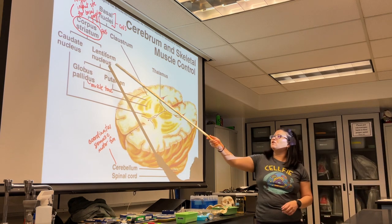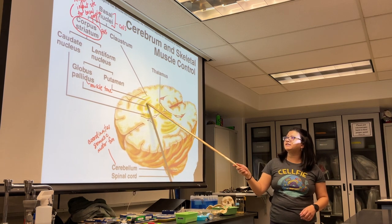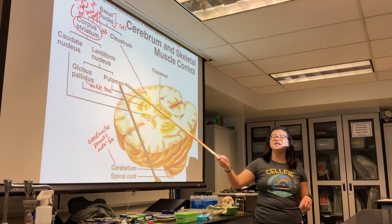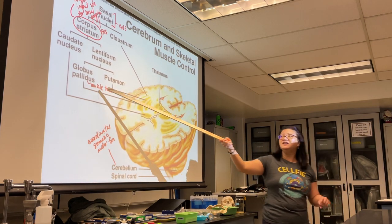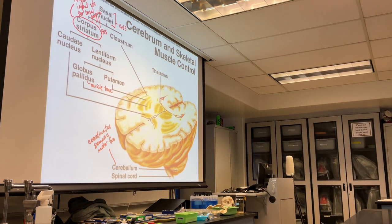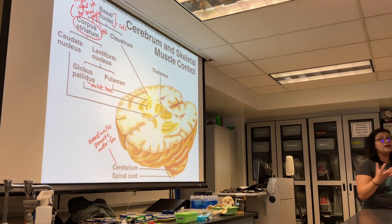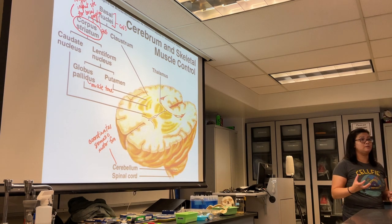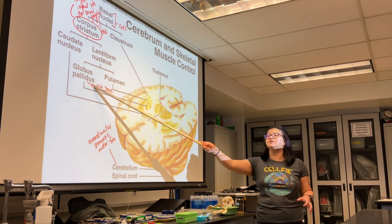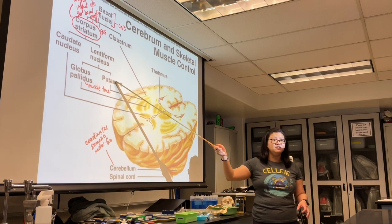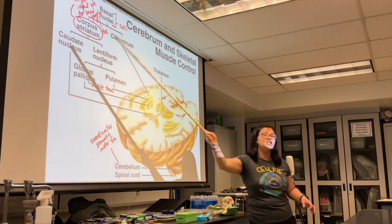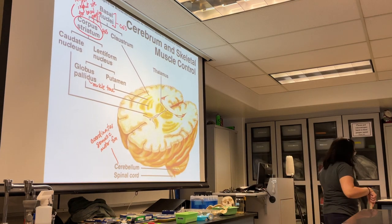The lentiform nucleus can be separated into the globus pallidus and the putamen. The globus pallidus controls muscle tone — tiny contractions that basically keep your muscles in shape. The putamen has essentially the same function as the caudate nucleus, helping control those large automatic movements.